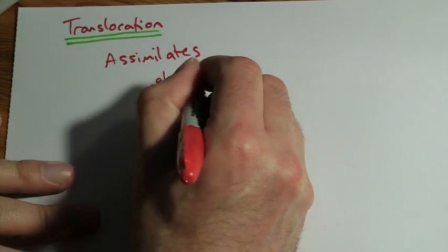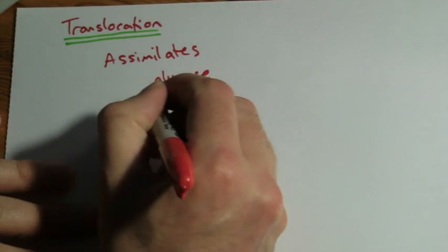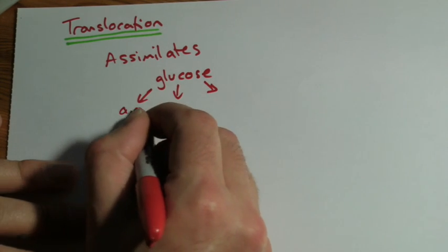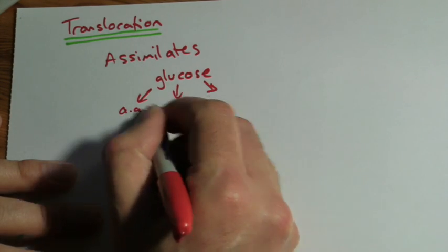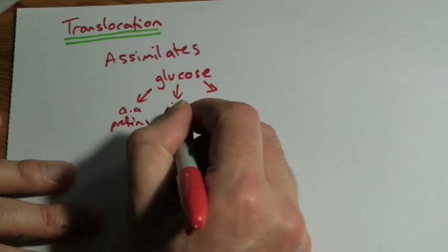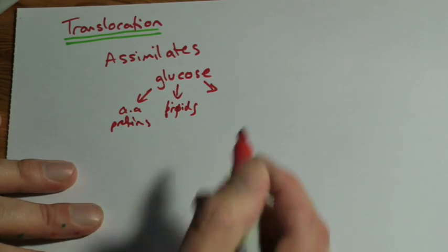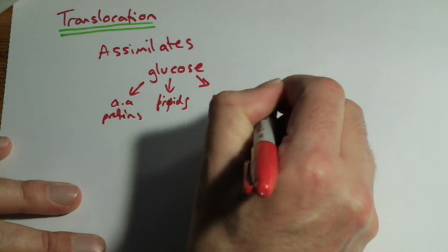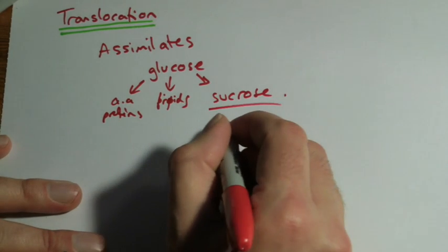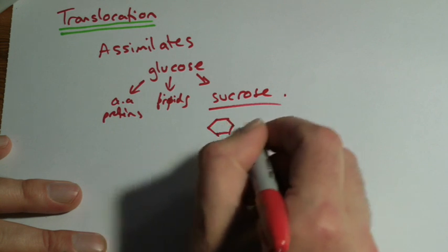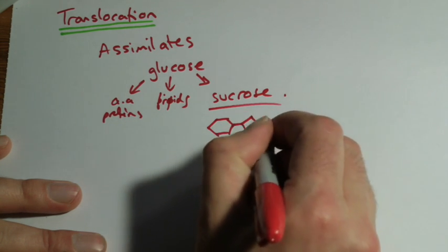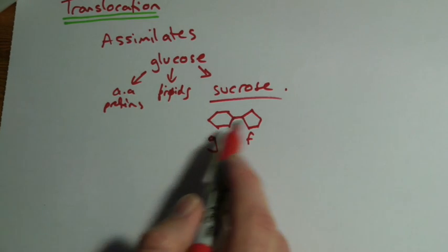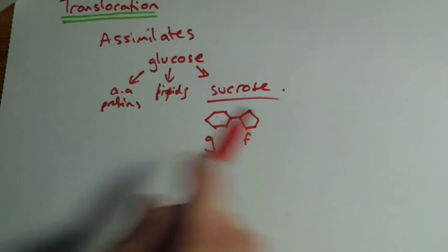What's basically made in photosynthesis is glucose initially, but then that can be converted into all kinds of other things: amino acids, proteins, lipids, and things like starch and so on. What we're actually interested in here is sucrose, which is a disaccharide. Let's just sort of draw one here. That looks a bit like that, I suppose. You've got glucose and fructose together, and that's called sucrose, that's our disaccharide.